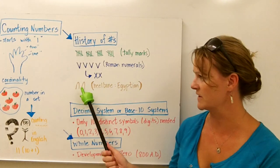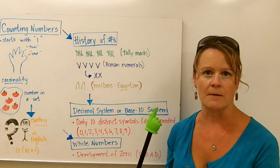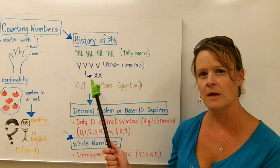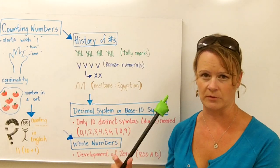Same with the Egyptians. They came up with symbols like the heel bone, the lotus flower. They came up with those symbols to represent certain numbers. But again, it became like a long string of symbols.